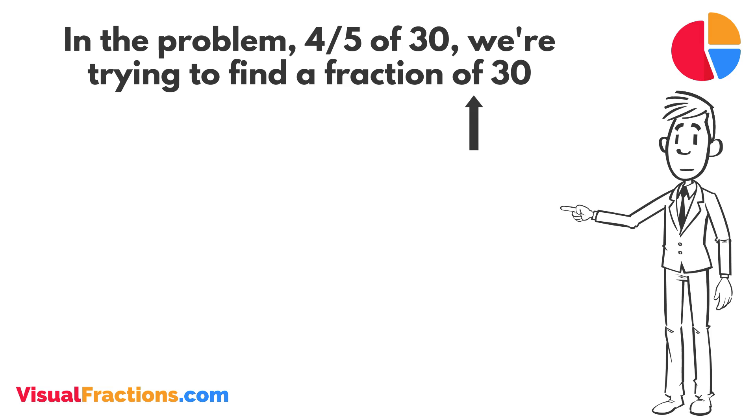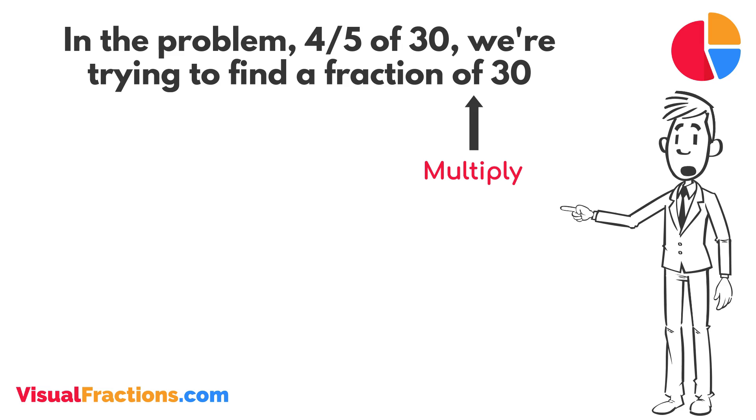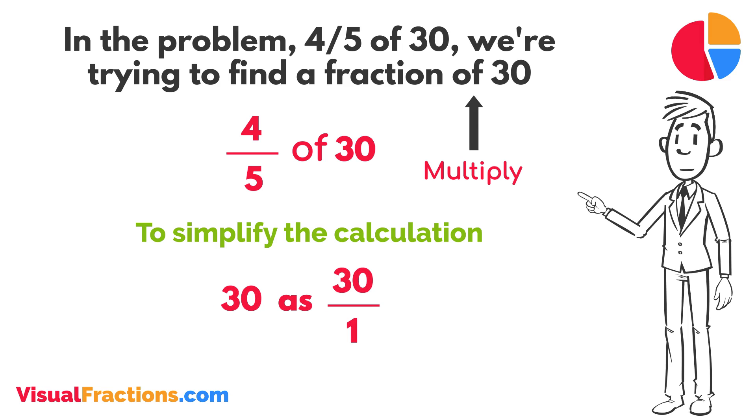The word of in mathematics typically means to multiply, so we rewrite our problem as multiplication. 4 fifths times 30. To simplify the calculation, we first convert our whole number into fraction form, writing 30 as 30 over 1. This transformation makes it easier to work with our numbers as fractions.